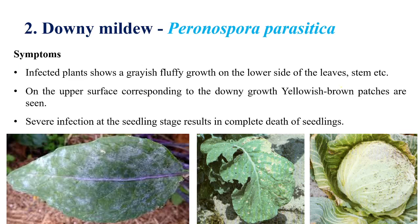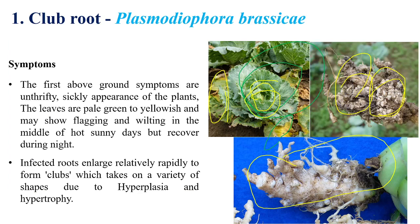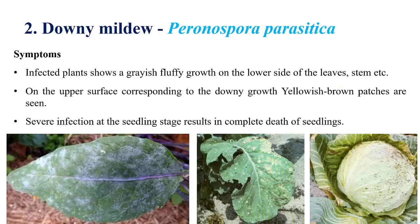One important note: the club root pathogen is not a true fungus; it actually comes under the protozoa group. Coming to the next disease, downy mildew, which is caused by Peronospora parasitica.